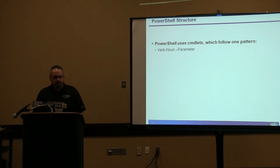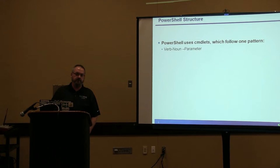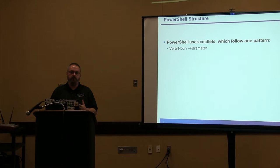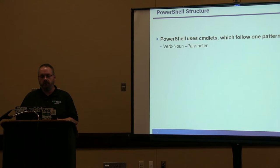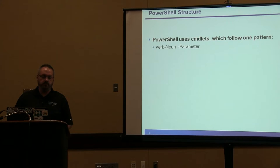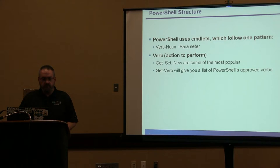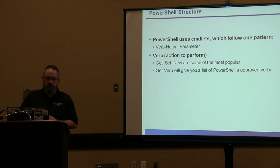Getting started with PowerShell — one of the first things is to understand the structure of how PowerShell cmdlets work. They always follow a pattern. You start off with a verb, then you have a dash-noun, and then optionally there are parameters. Some, depending on the cmdlet, parameters may be required. On the verb, you think of that as the action you're going to perform — get, set, and new are some of the most popular.